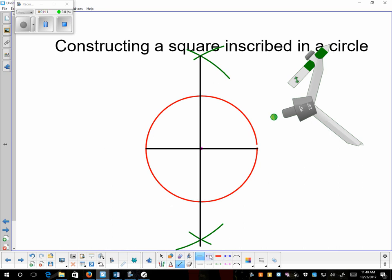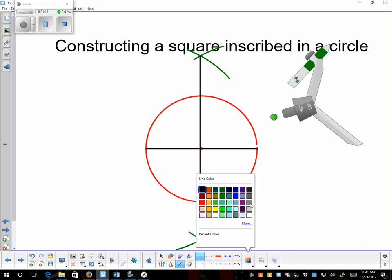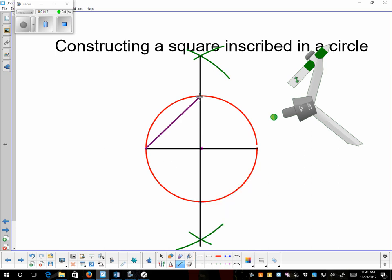And from there, I will just connect the endpoints of the two diameters. And what you should get is a nice square that has the property of having perpendicular diagonals.